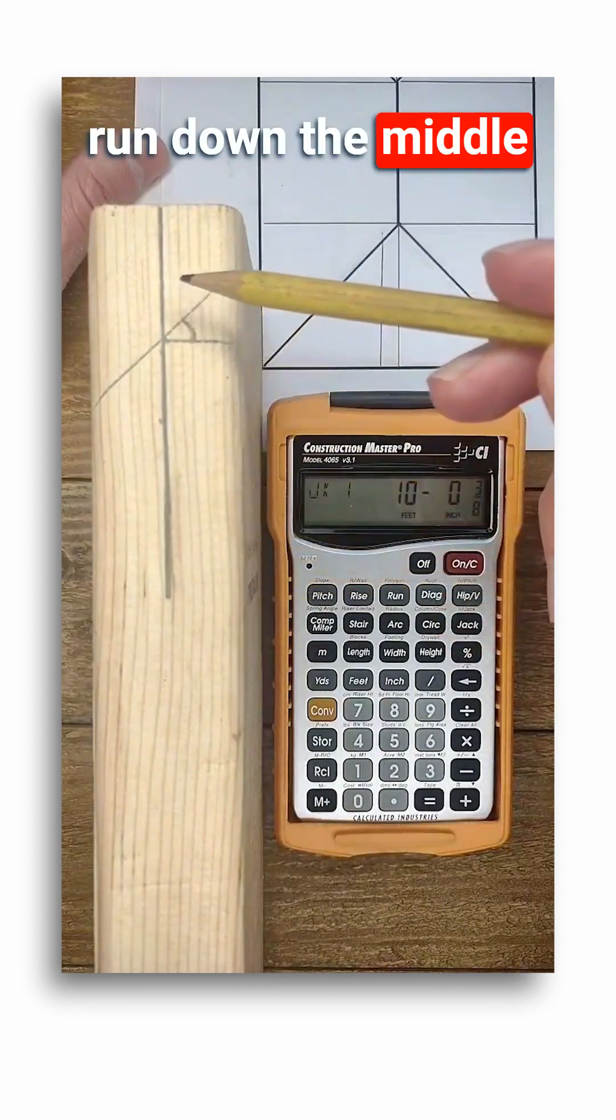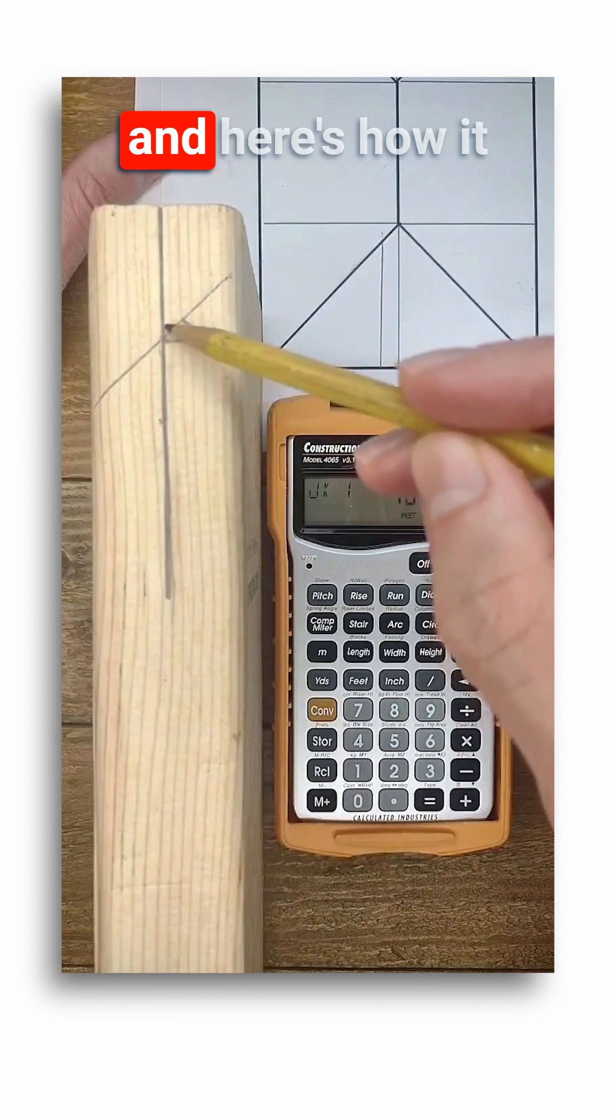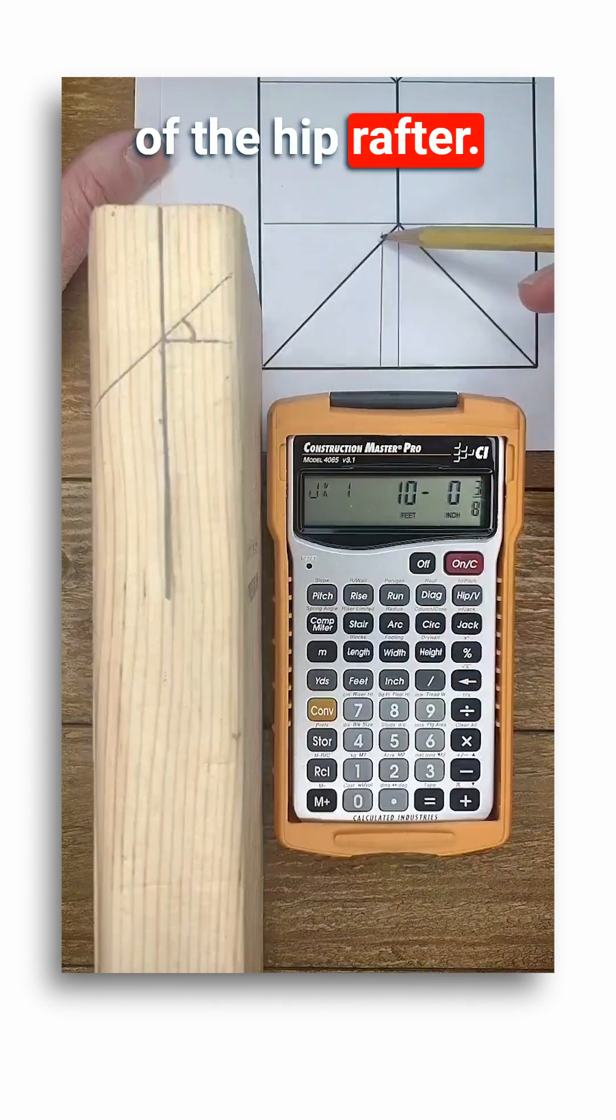So that length would run down the middle of my jack rafter. And here's how it would intersect with the center of the hip rafter.